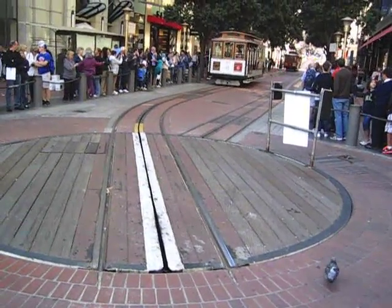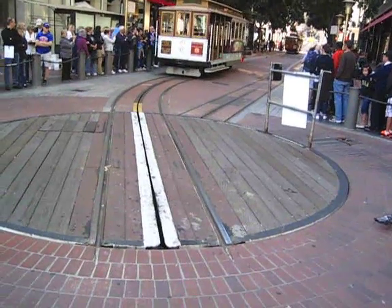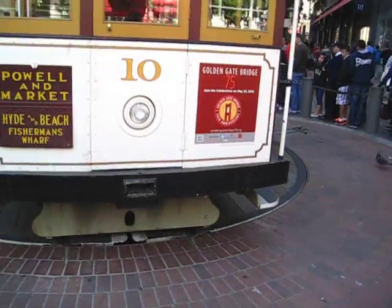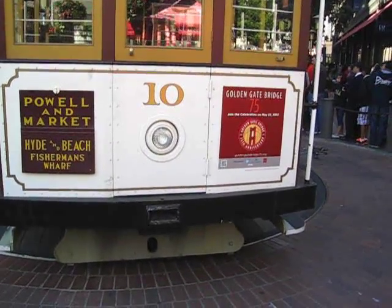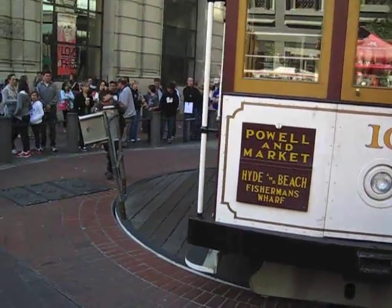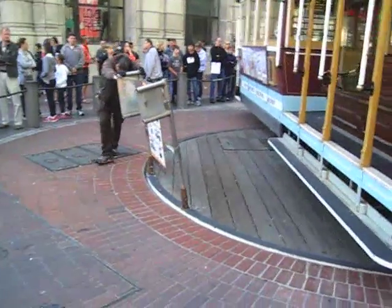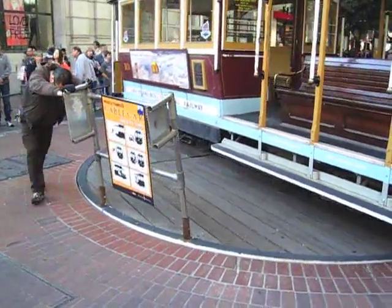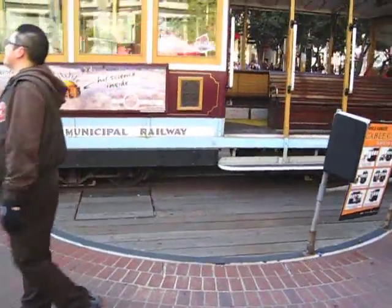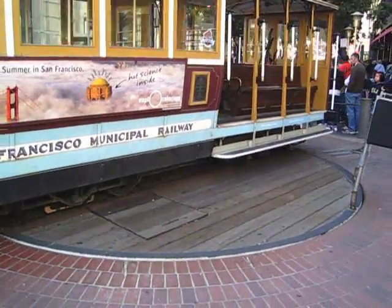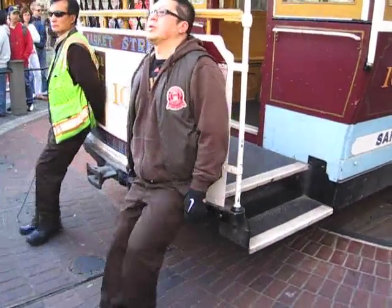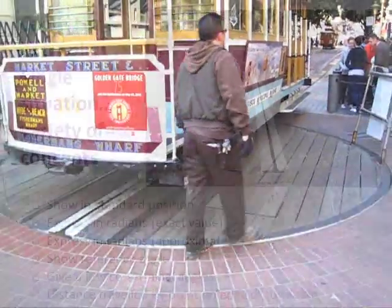All right, here's the San Francisco cable car coming into the turntable at the end of the line. It's going to turn through an angle of about 150 degrees, I think, counterclockwise. And they're doing this by hand. And then they're going to push it down back the other way.